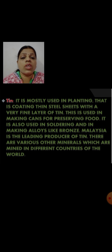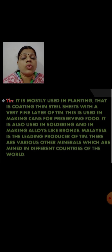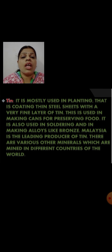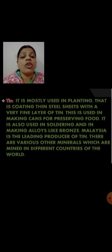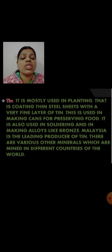The next one is about tin. What is the use of tin? It is mostly used in plating, that is coating thin steel sheets with a very fine layer of tin, and this is used in making cans for preserving food — so that food does not spoil. It is also used in soldering and in making alloys like bronze.